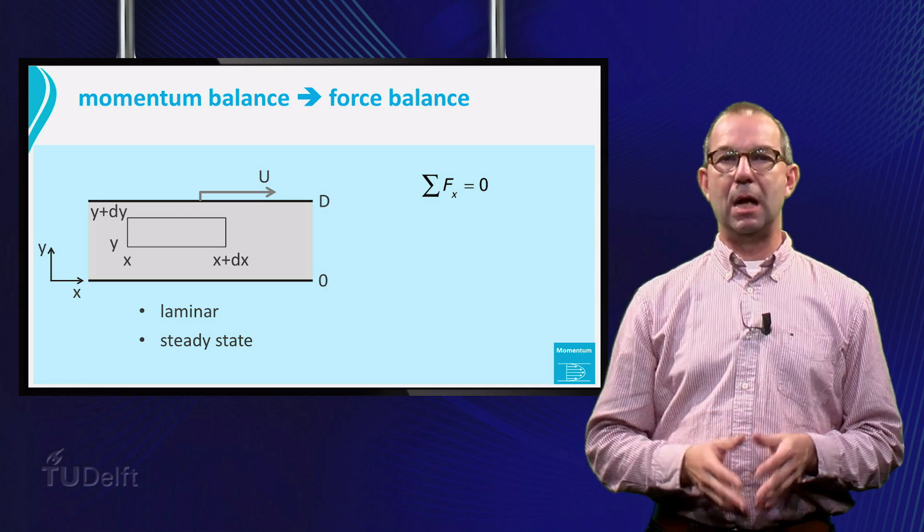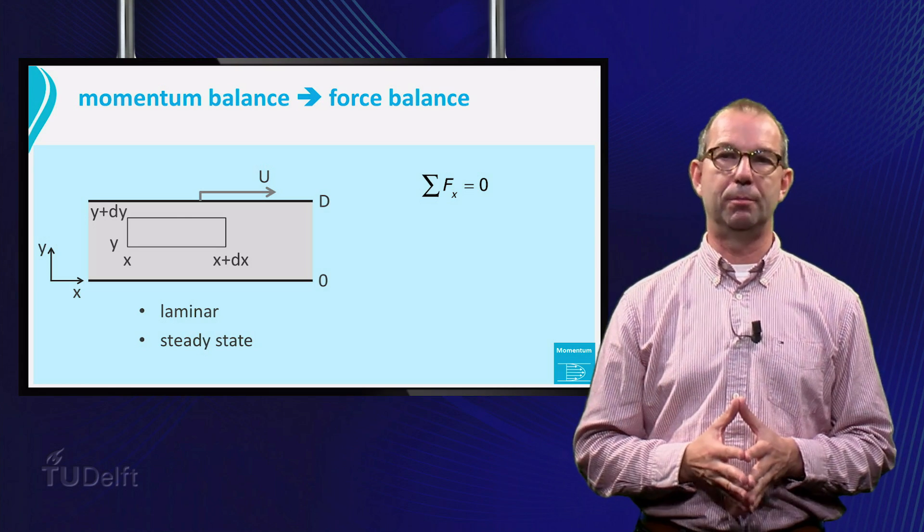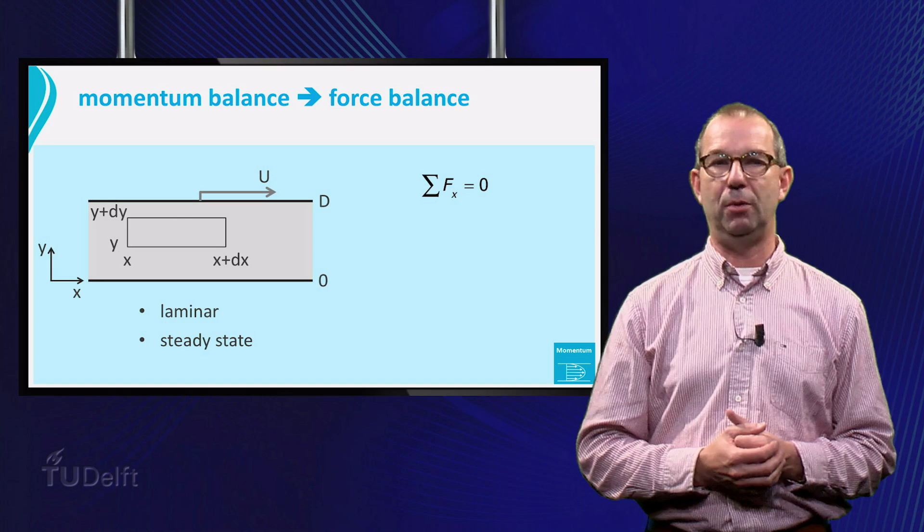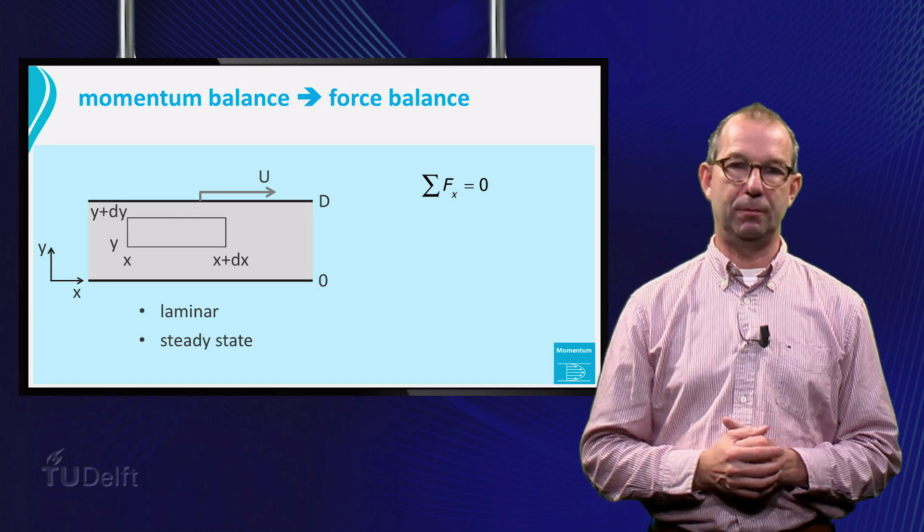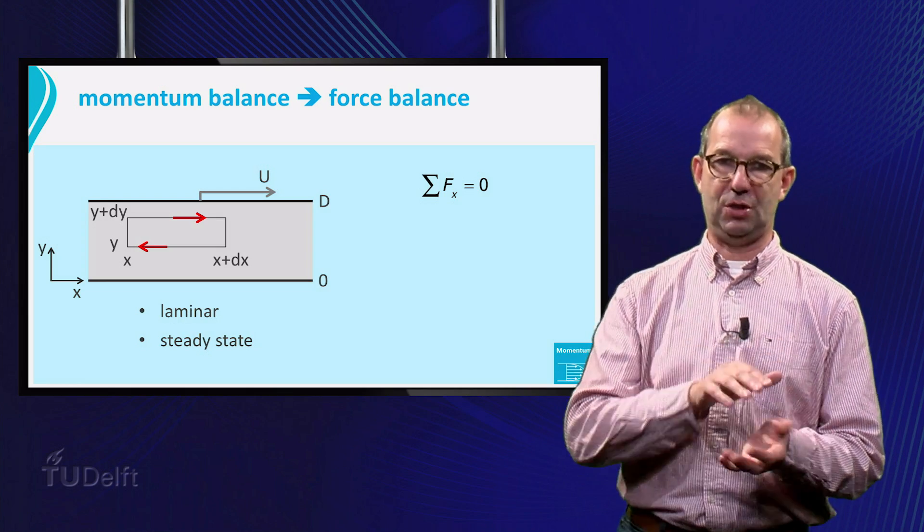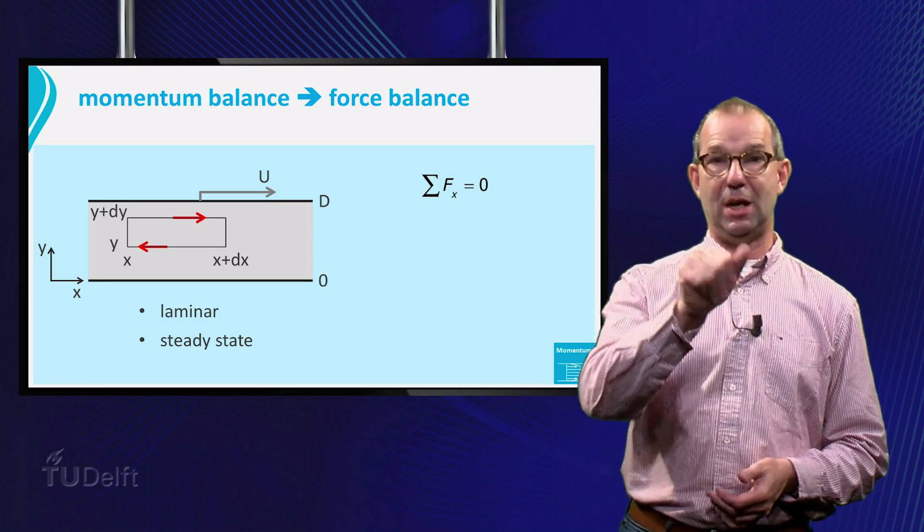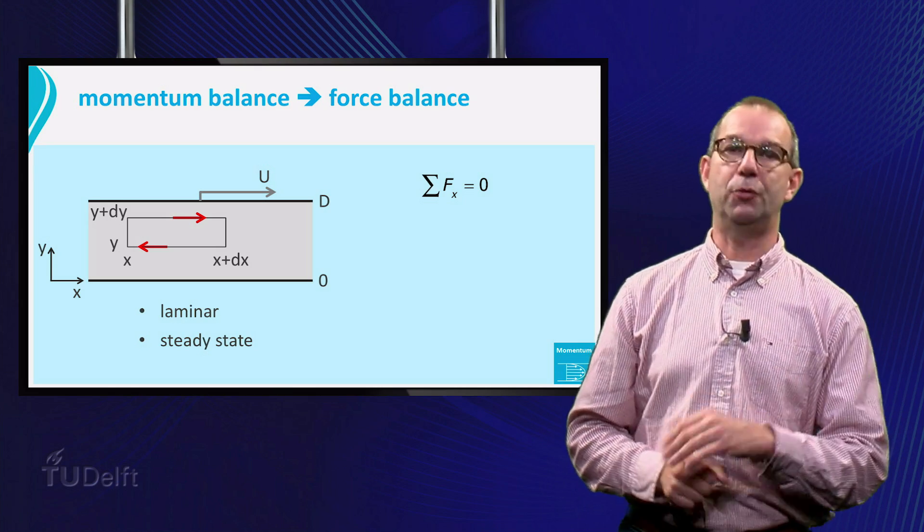Next step, list all forces acting on the control volume. In this case that's simple. No gravity and no pressure difference in the fluid. All we have are the two friction forces, that is a shear stress at the top and at the bottom of the control volume.